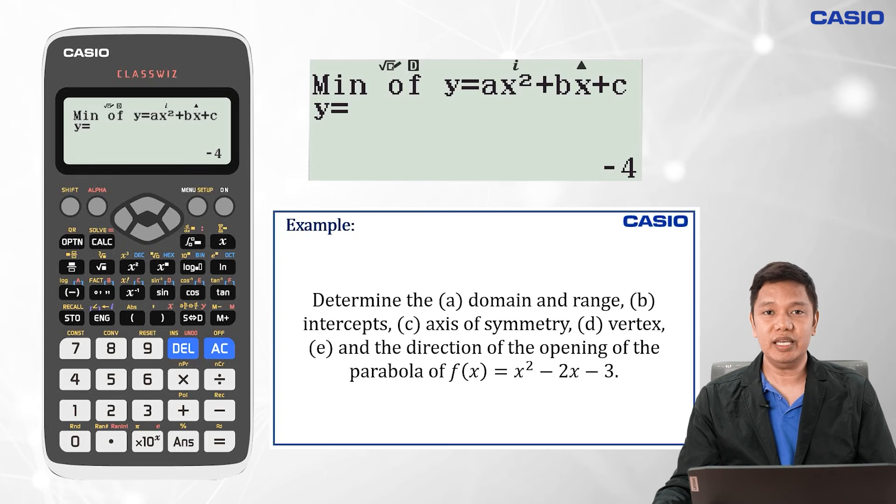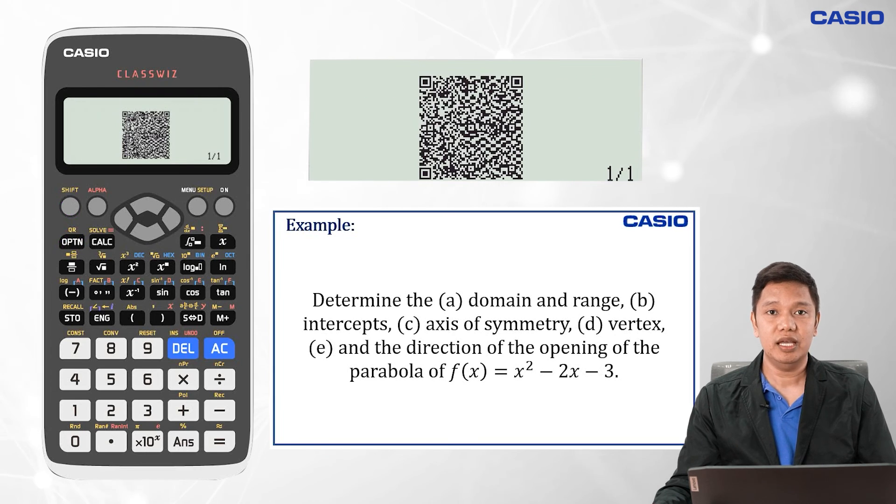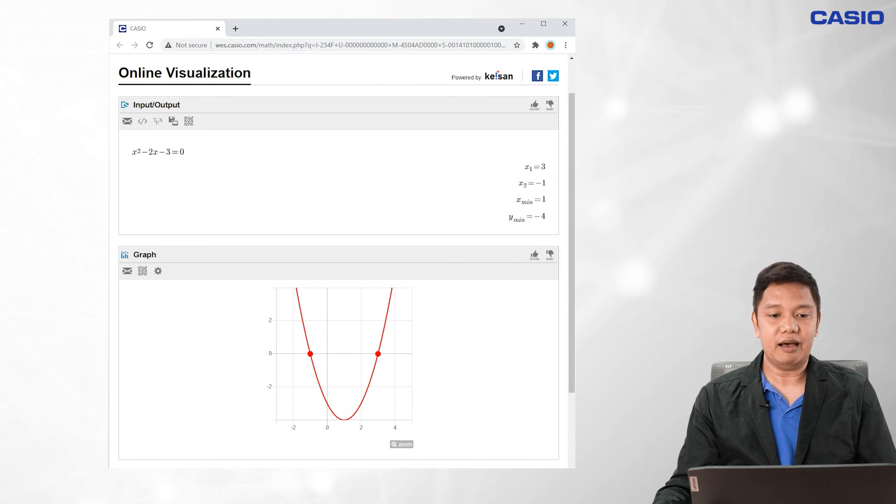we can access the QR code for the Casio ClassWiz by pressing Shift and then Options. You can see the QR code on your screen. By scanning using your smartphone's QR code reader, you will be prompted to the Casio website. Doing so, we have the graph of the quadratic function. I hope that you were able to grasp the steps in determining the properties of graphs of quadratic functions.